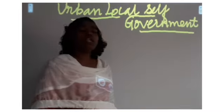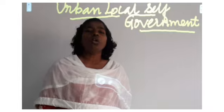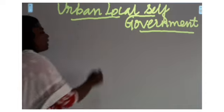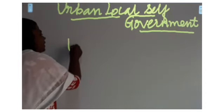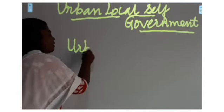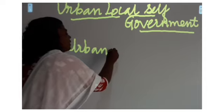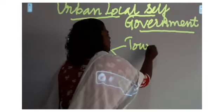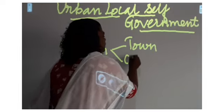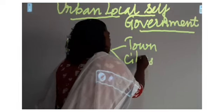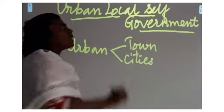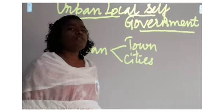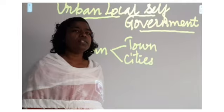Now we will see today the urban local self-government. What is the meaning of the word urban? The word urban denotes the towns and cities. Now we will see the urban local self-governments. There are different bodies of urban local self-governments.